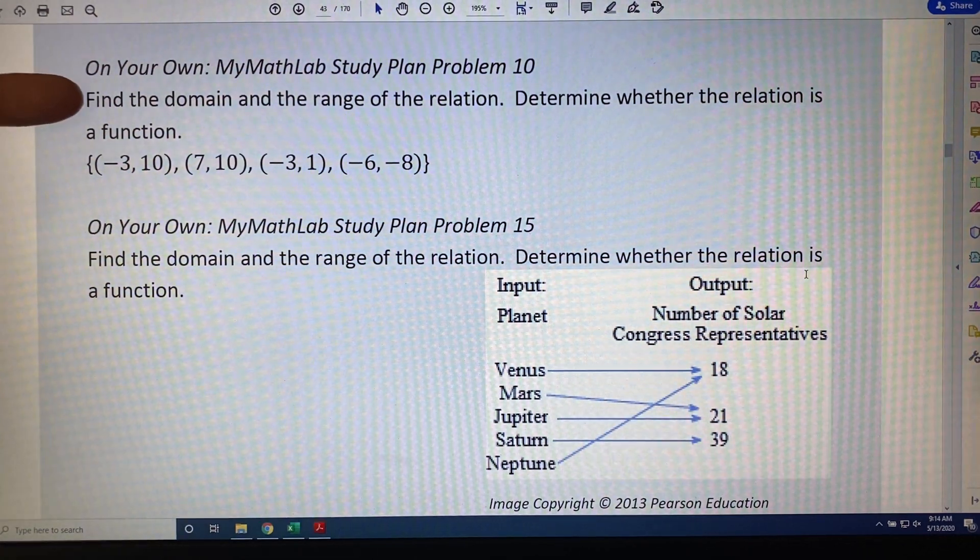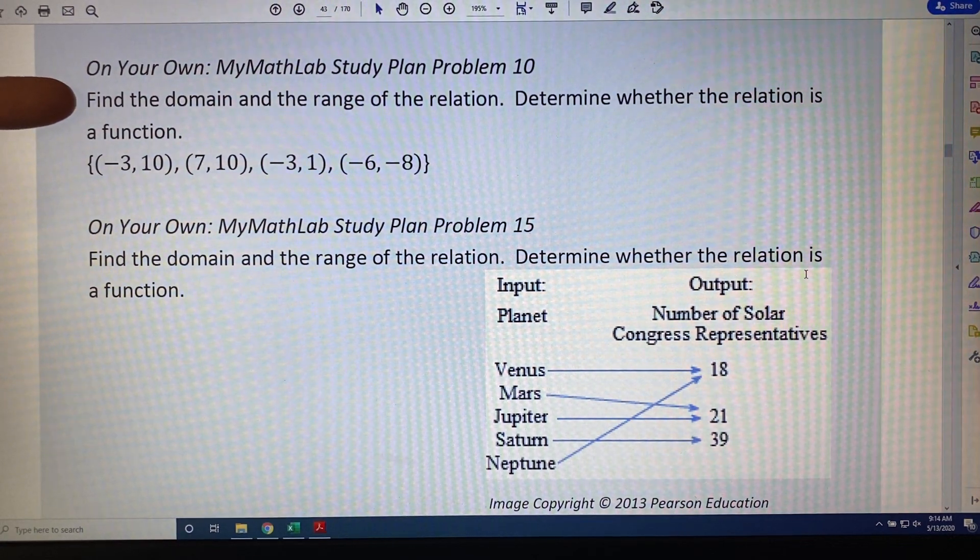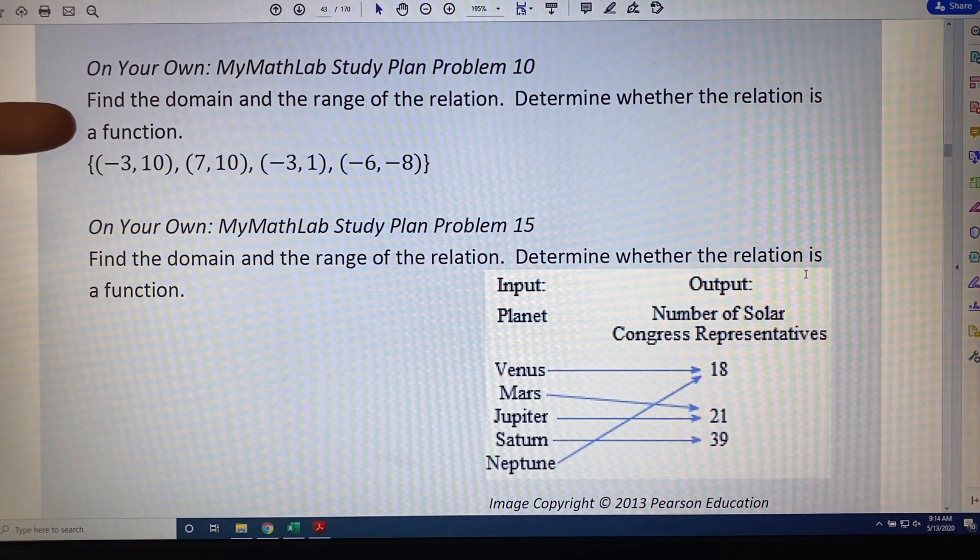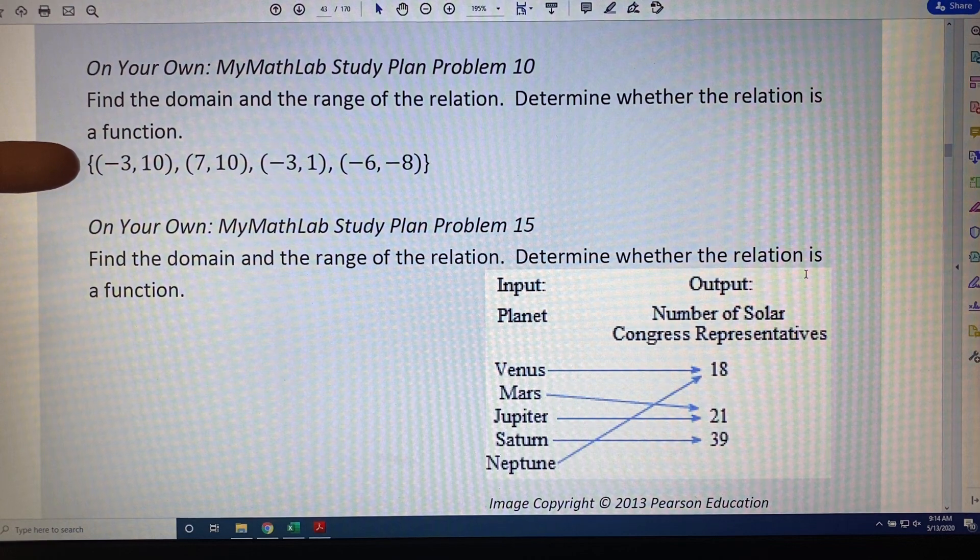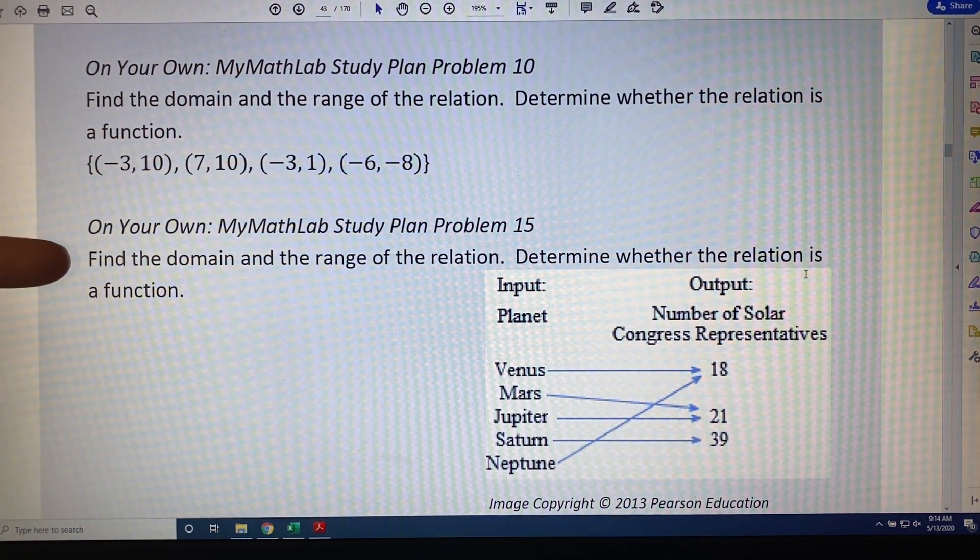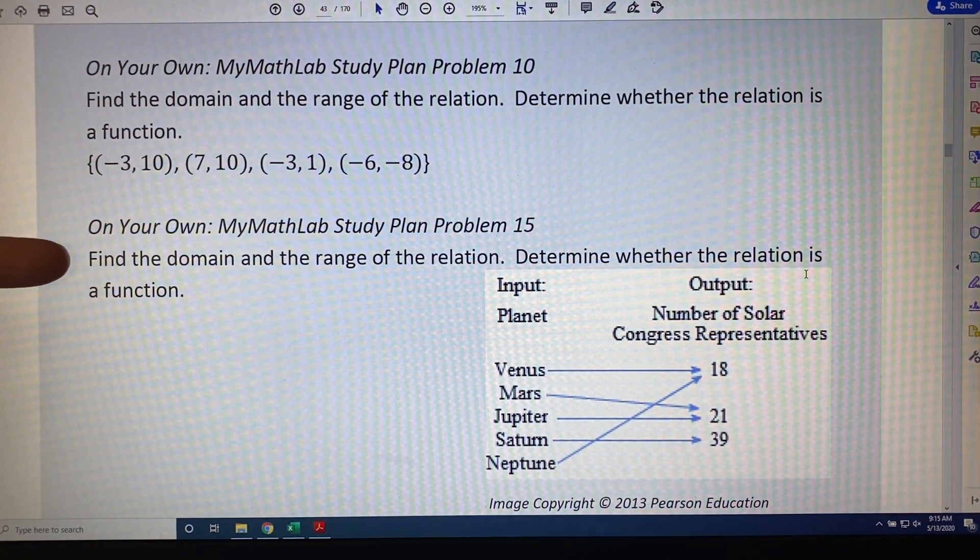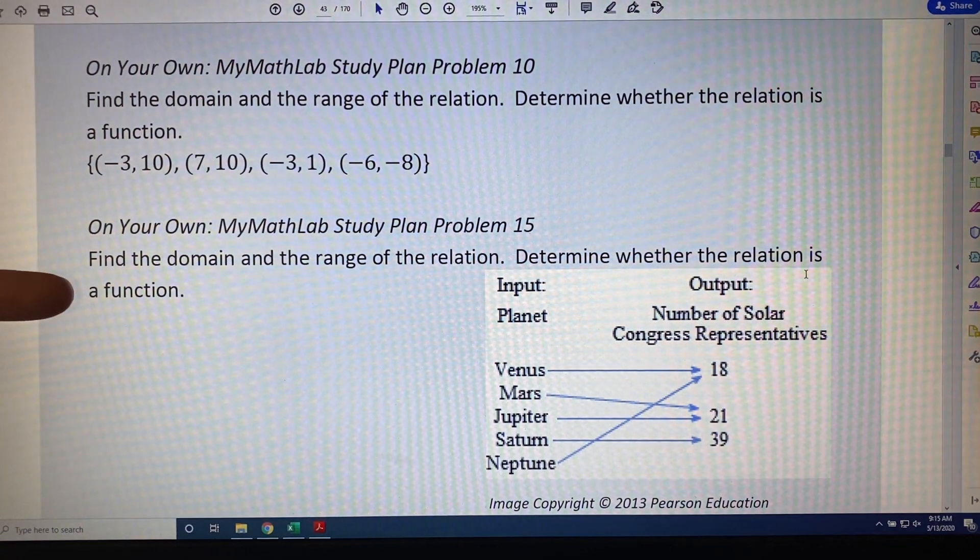The first one says, find the domain and range of the relation. Determine whether the relation is a function. And we're given a collection of ordered pairs. The second problem says, find the domain and range of the relation. Determine whether the relation is a function.